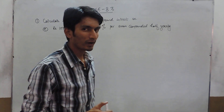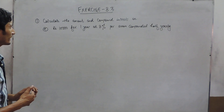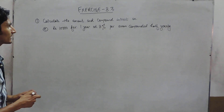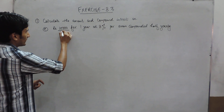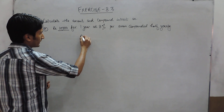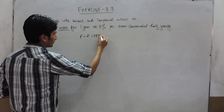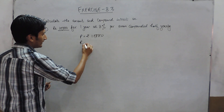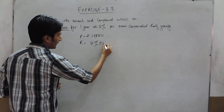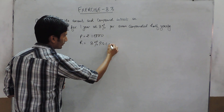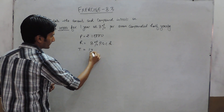Hello everyone. In this part we are going to solve part number E. We have to find the compound interest and the amount on rupees 10,000. Here the principal is rupees 10,000, the rate is 8% per annum compounded half yearly, and the time is 1 year.